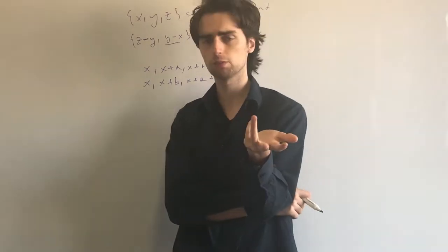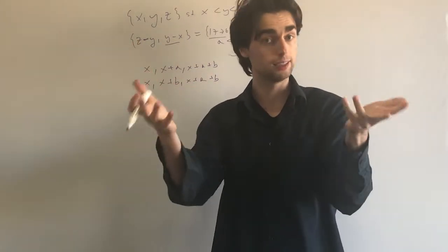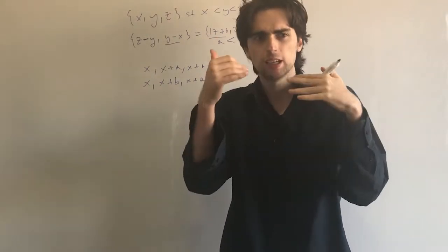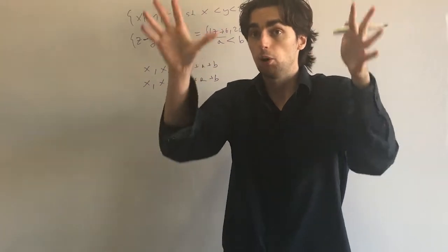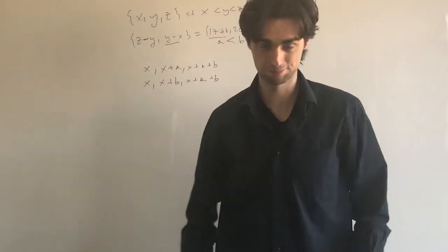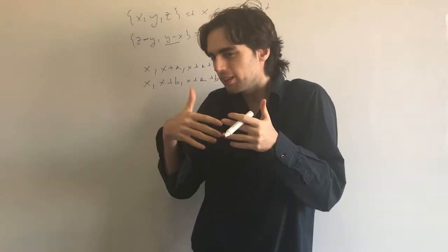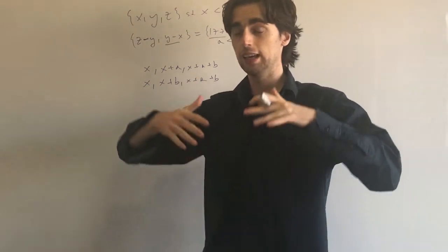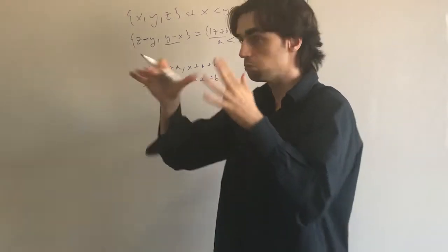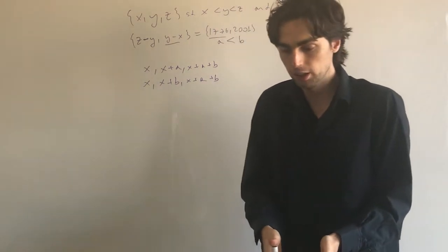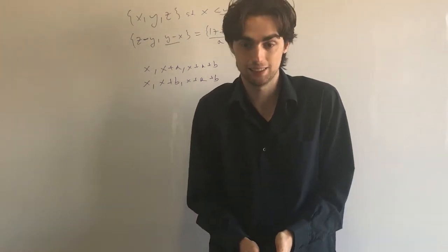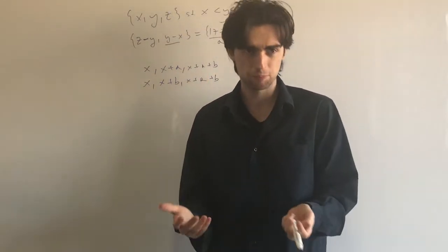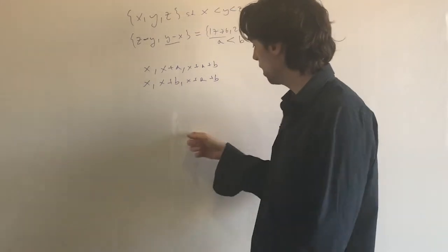How would you construct this partition? I think of it as a process where I'm adding one number after another. I would start with the smallest number possible, then go to the next number not yet placed in a set, and so on — always proceeding from smallest to largest.